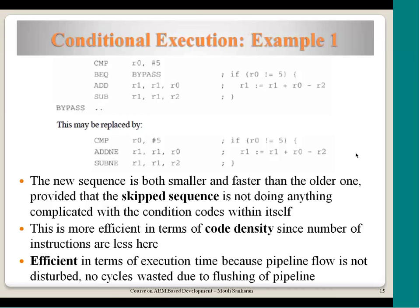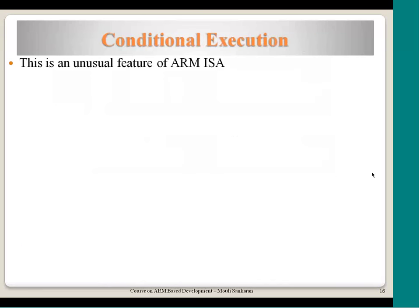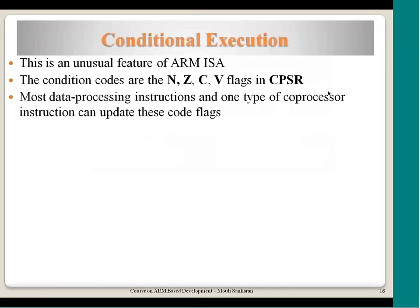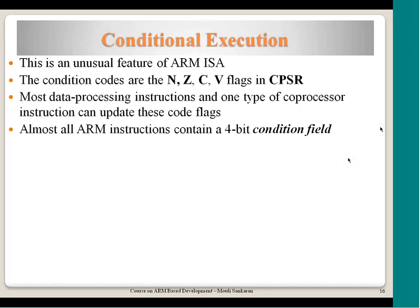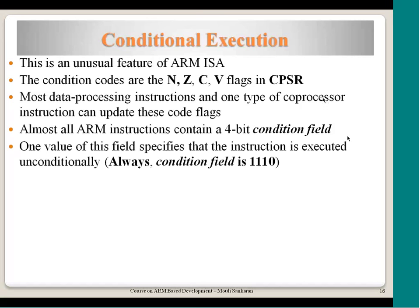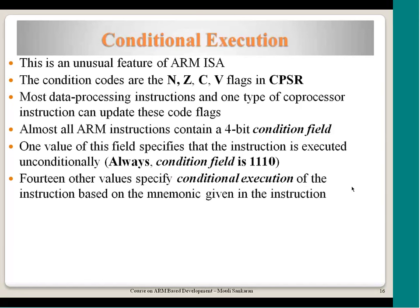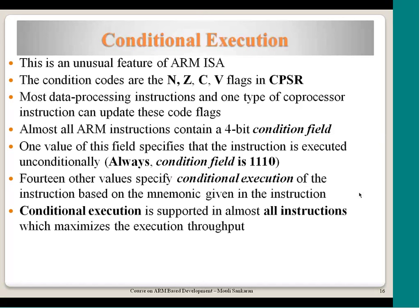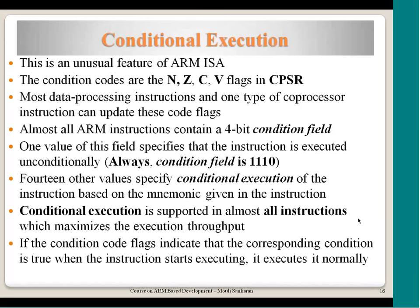Code density is better here — only 3 instructions versus 4 instructions to do the same job. Execution time is also better because of this particular feature supported by ARM. There are some limitations or side effects to this, which we will talk about in a subsequent lecture. This is an unusual feature of ARM ISA. Conditional codes are these condition flags. Most data processing instructions can affect these flags. Almost all ARM instructions contain a 4-bit conditional field — the first 4 bits of the instruction always talk about whether the particular instruction needs to be executed based on a particular combination of flags. If it is 1110, execute that instruction irrespective of flag values.